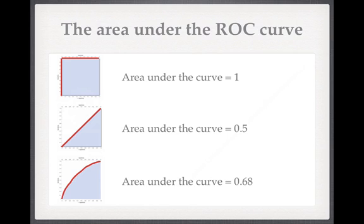One way to do this is by looking at the area under the ROC curve. For the perfect test, the area under the curve is the area of a square with side length one, giving an area of one. For the perfectly bad test, the area is just half of that — 0.5. For the PSA test, the area under the curve was 0.68.